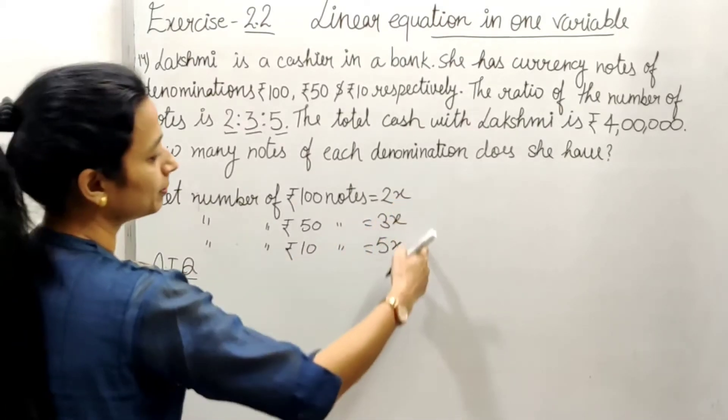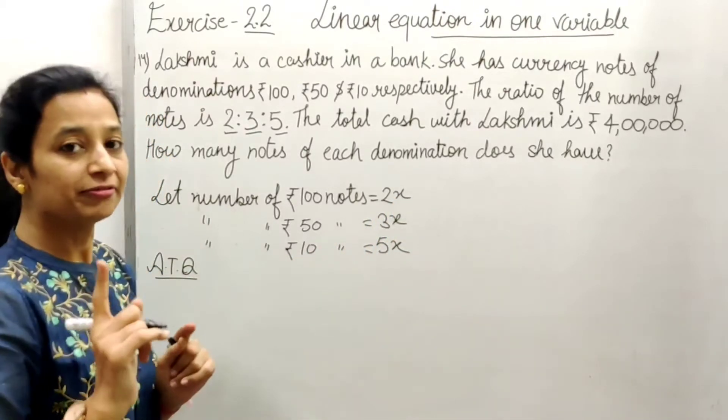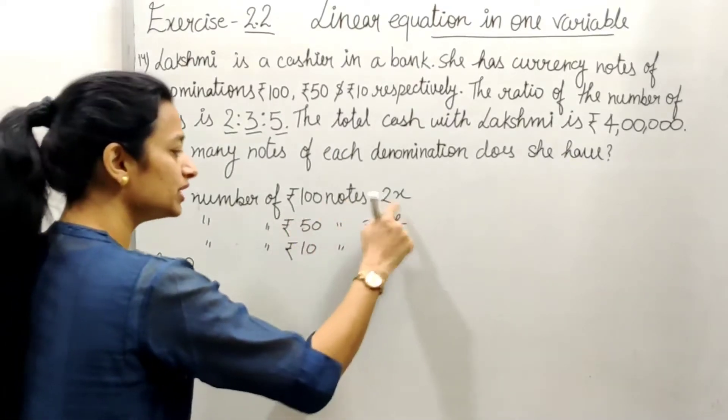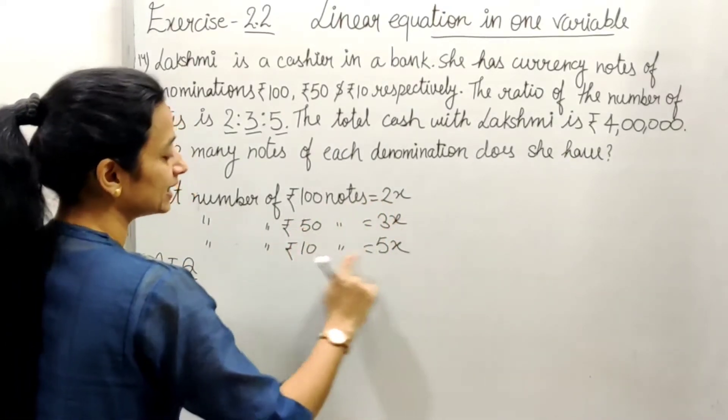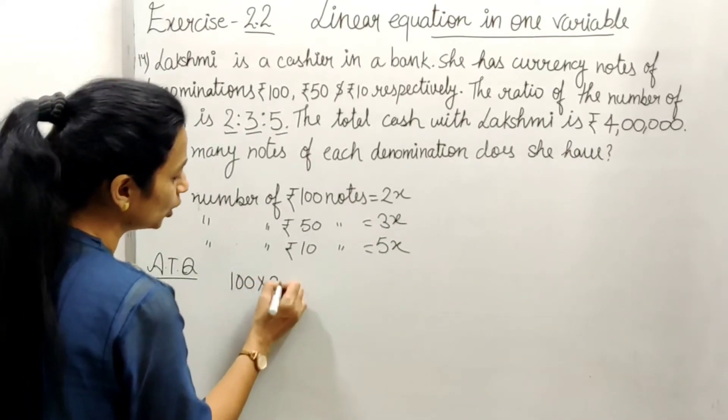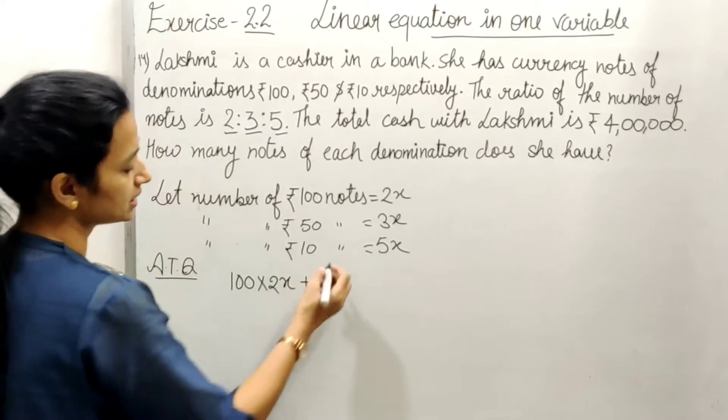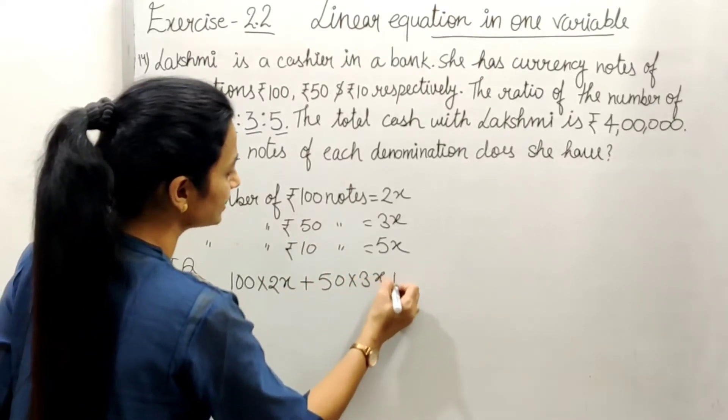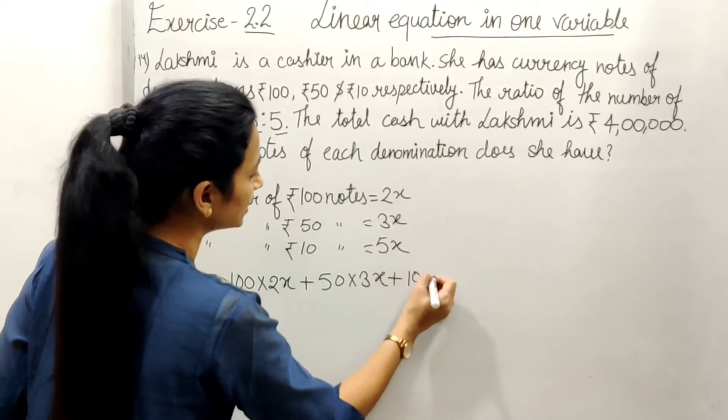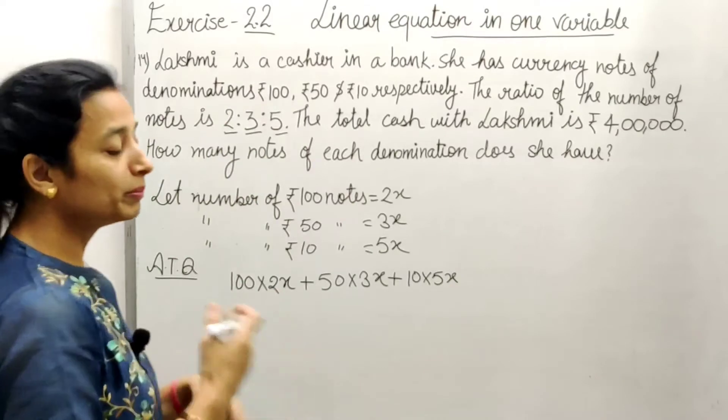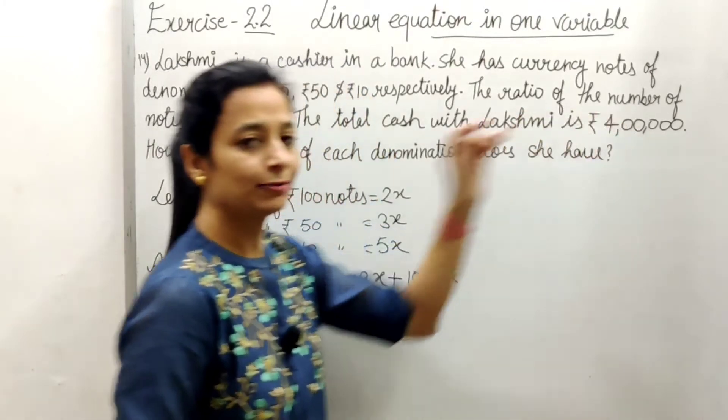We will find the total amount by multiplying each denomination by its quantity. So we get 100 into 2x plus 50 into 3x plus 10 into 5x, and all this together equals ₹4,00,000.